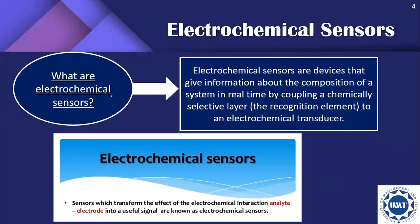Electrochemical sensors are devices that give information about the composition of a system in real time by coupling a chemically selective layer to an electrochemical transducer. Sensors which transform the effect of the electrochemical interaction into a useful signal are known as electrochemical sensors.